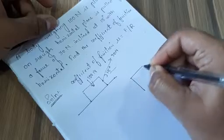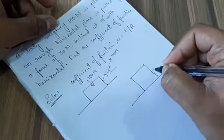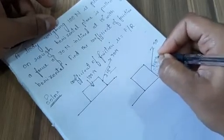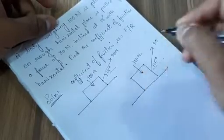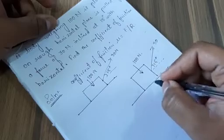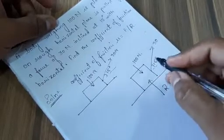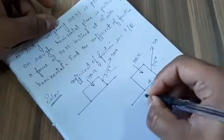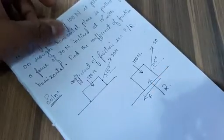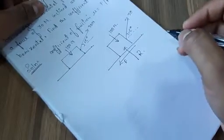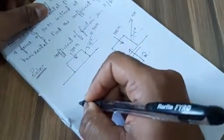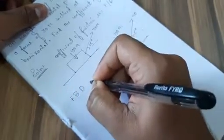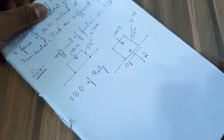If this is the body, this is the applied force, and this is the weight of the body. Because of the weight, there will be a reaction developed, which is equal to R. Since the body is being pulled towards the right side, friction will be developed at the left side, which is equal to F. This is called the free body diagram of the body.